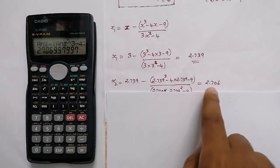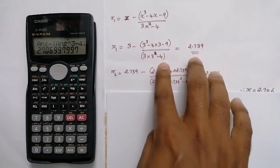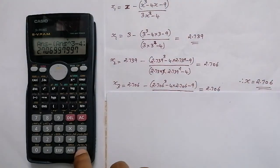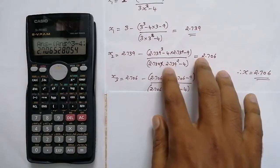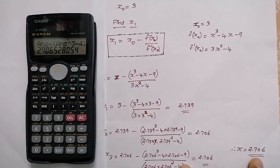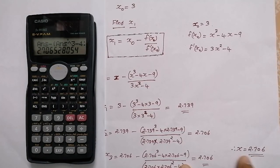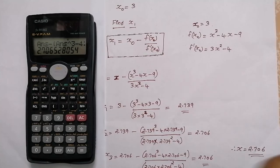Pressing equal to gives us 2.739 — that is X1. Pressing equal to again gives 2.706 — that is the second iteration. Pressing equal to once more gives 2.706 again — that is the third iteration. Since the value repeats at 2.706, our f(X) equals 0 and the Newton-Raphson method has converged. The answer is X = 2.706. If you have any doubts, please rewatch the video and mention your doubt in the comment section.